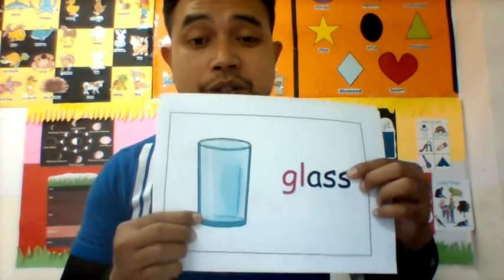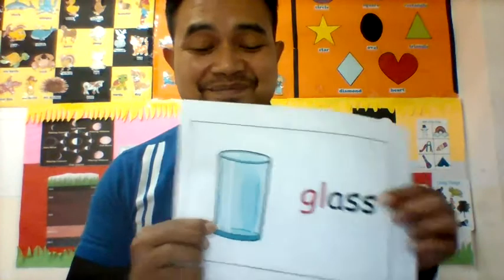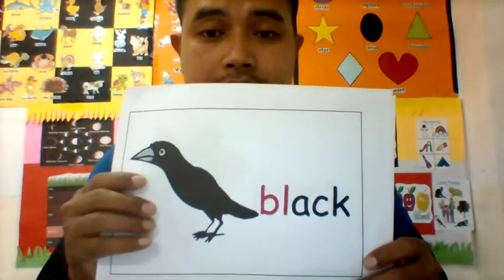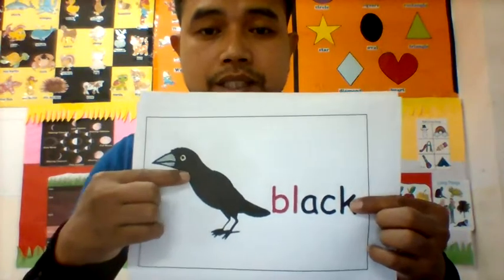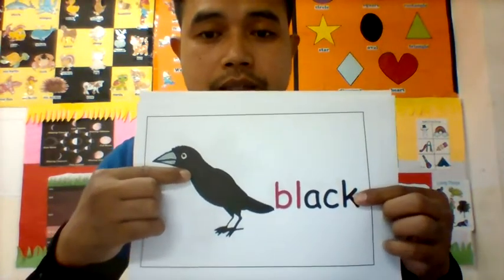So be careful when you are using a glass cup. Now let's look at this next image. What is this? This is a bird, right. What color is the bird? It is black. So what type of bird is black? It would be a crow, right — usually a crow is black.